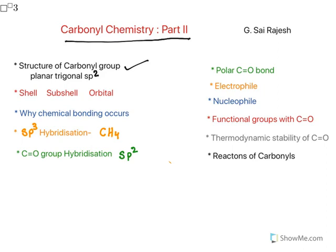Planar means all the atoms exist on a single plane — in other words, it is a flat molecule. Trigonal means the shape appears to be triangular. sp2 hybrid means 1s and 2p orbitals combine to give sp2 hybrid orbitals.